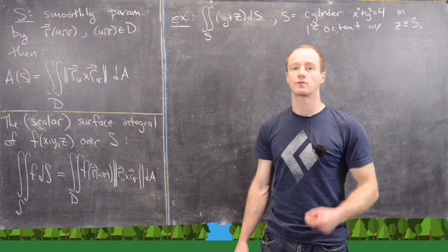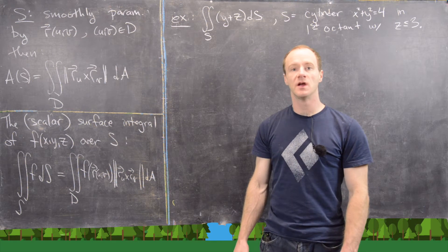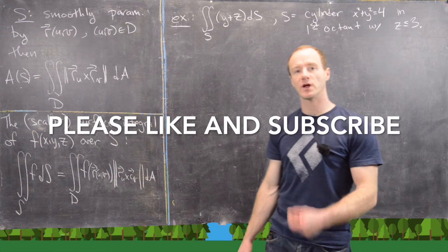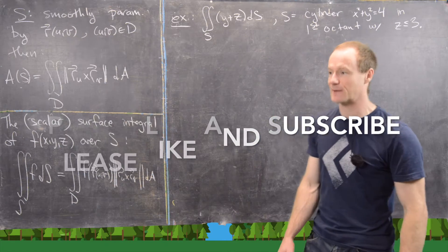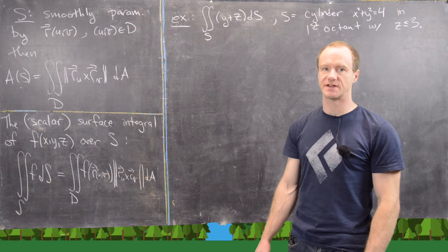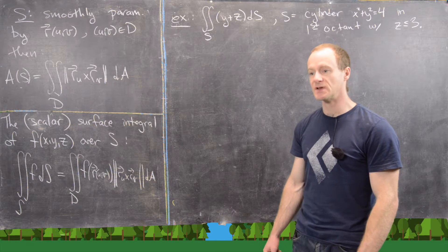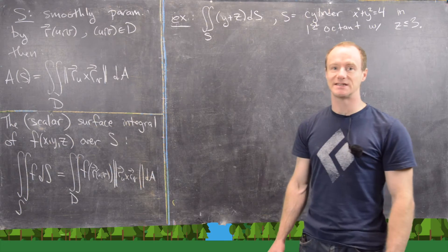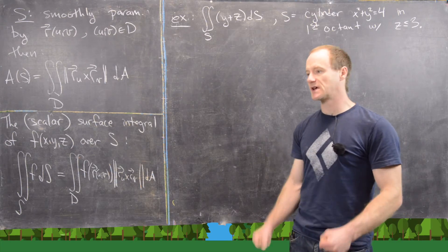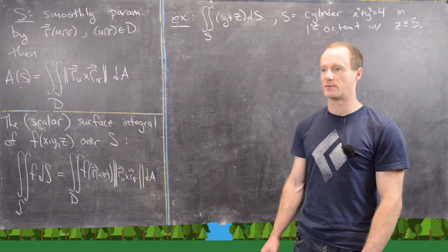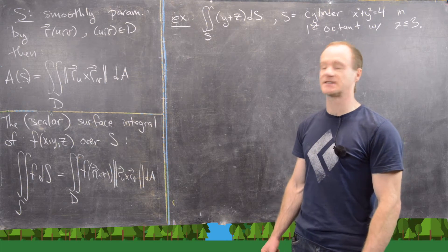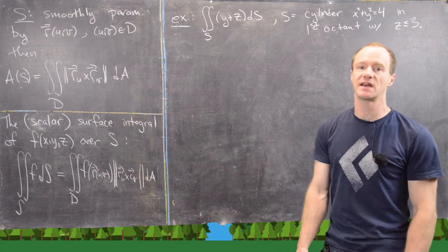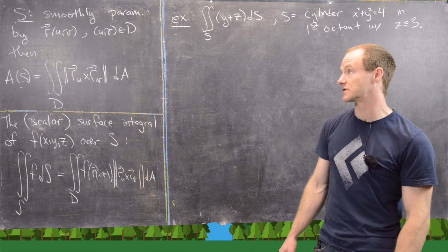In a previous video we derived a formula for the surface area of a parameterized surface, and then we also had another video where we did an example calculating a surface area for a parameterized surface. There's a notion that is really closely connected to that process, called the scalar surface integral. Before we look at that, let's just recall the area of a parameterized surface.